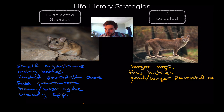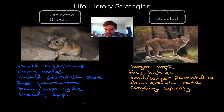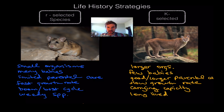K-selected species are going to be larger organisms. They're going to have few babies and they're going to care for those babies for a longer time — so longer parental care. They're going to have a slow growth rate and their population will hover around their carrying capacity, limited by limiting resources.